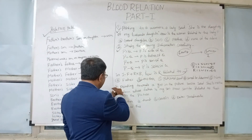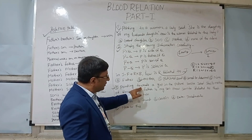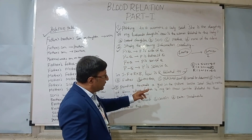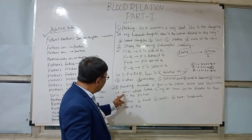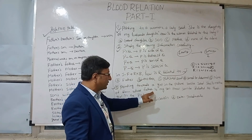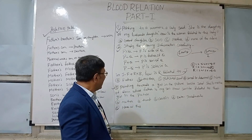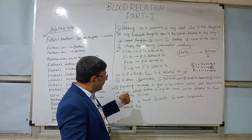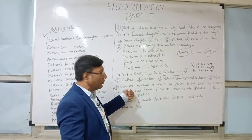Now question three. Pointing towards a girl in the picture, Sunita said: she is the mother of Renu, whose father is my son. How is Sunita related to that girl in the picture? Again, this is a very simple question when you read carefully.